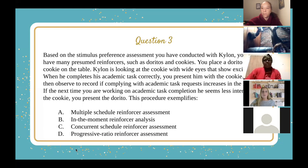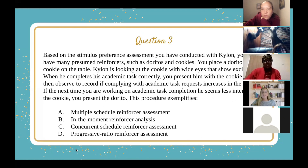Question three: Based on the stimulus preference assessment you've conducted with Kylon, you now have many presumed reinforcers such as Doritos and cookies. You place a Dorito and a cookie on the table. Kylon is looking at the cookie with wide eyes that show excitement. When he completes his academic tasks correctly, you present him with the cookie. You then observe and record if complying with academic task requests increases in the future. If the next time you're working on academic task completion he seems less interested in the cookie, you present the Dorito. This procedure exemplifies: A, multiple schedule reinforcer assessment; B, in-the-moment reinforcer analysis; C, concurrent schedule reinforcer assessment; or D, progressive ratio reinforcer assessment.